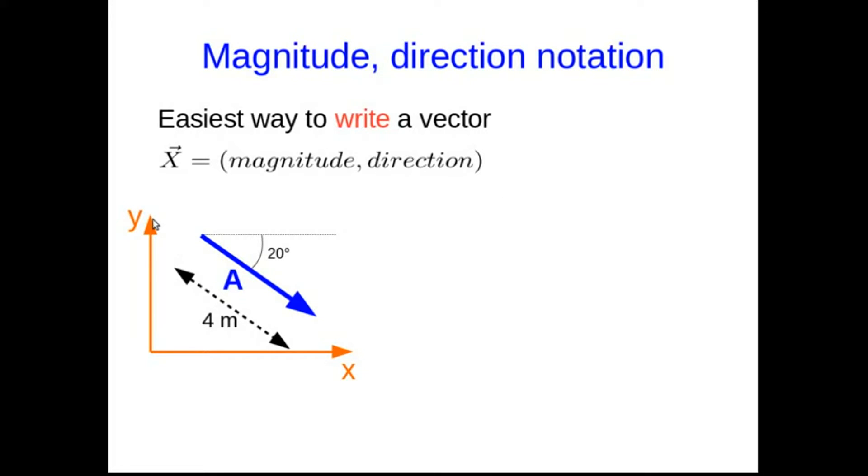So for example, if I have this vector A, and let's say it's a displacement vector, and let's say it is 4 meters long, so that's its magnitude, and it's pointing in this direction, you need to be able to specify directions as precisely as possible. So let's say this angle here defines the direction of A.